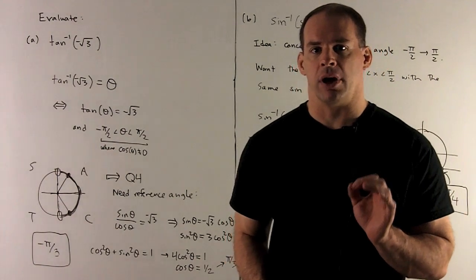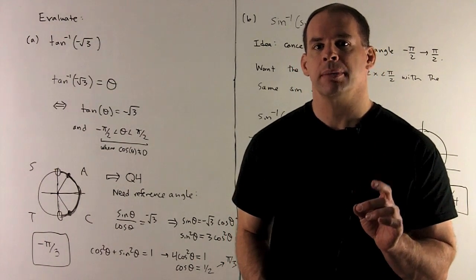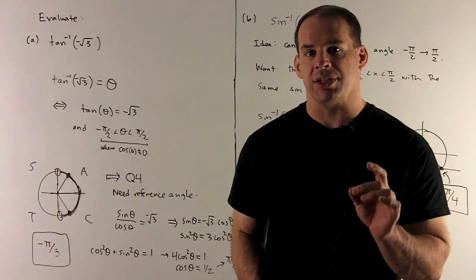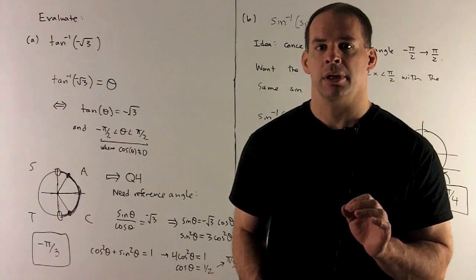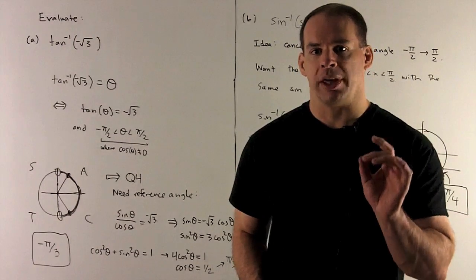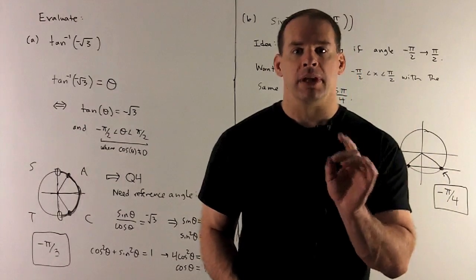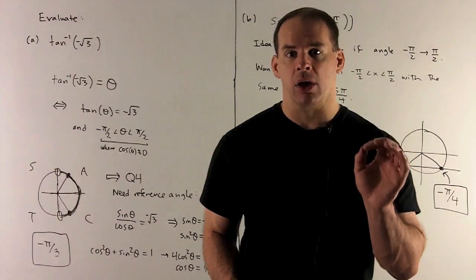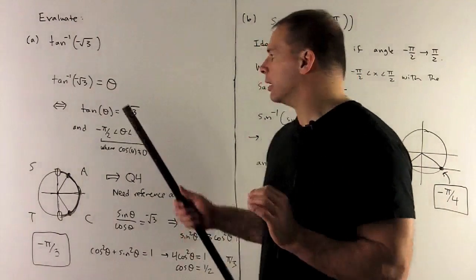Let's evaluate some trig functions. First, inverse tangent of minus square root of 3. Our first step, we want to give this a name. Inverse tangent is going to return an angle, so the name I'll use is theta.